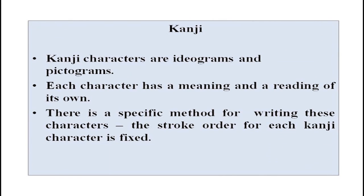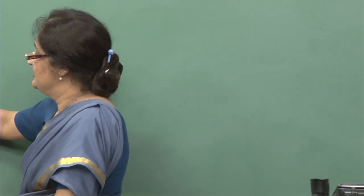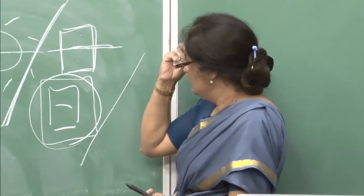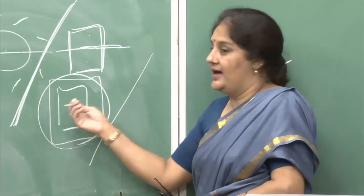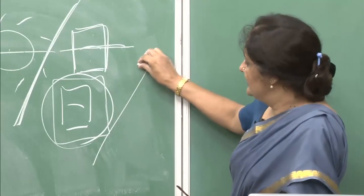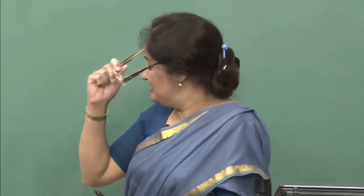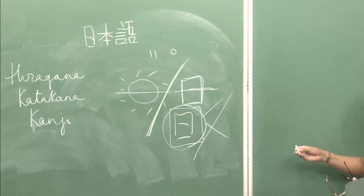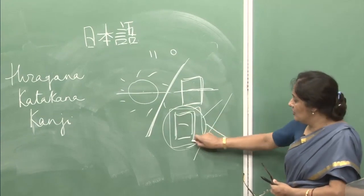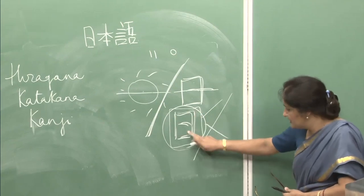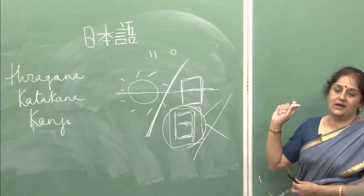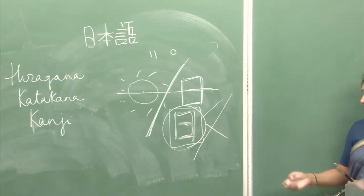Kanjis are ideograms and pictograms — each character has a meaning. Each character has a minimum of two readings: one a Chinese reading and another one a Japanese reading. There are specific ways of writing and one has to memorize the stroke order — how the strokes are to be made. In kanji it is extremely important to memorize and learn the stroke order because the stroke order for a character is fixed and does not change.